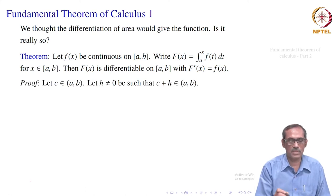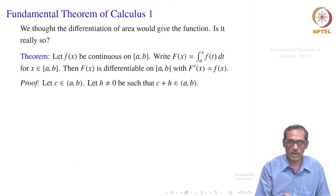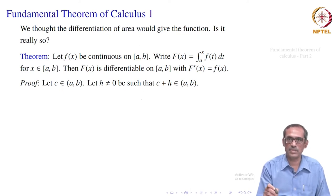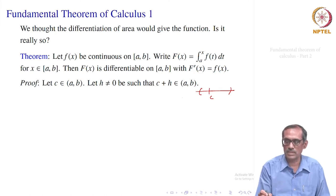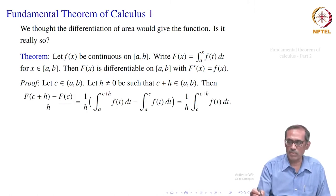The conditions are: f of x is continuous on a to b, so the integral from a to x of f of t dt exists — call that capital F of x. We have to show that capital F, which equals the integral from a to x of f of t dt, is differentiable, and its derivative equals f of x at any point x in the closed interval a to b. To show this, let us start with some point c inside the open interval a to b — we will come to the endpoints later.